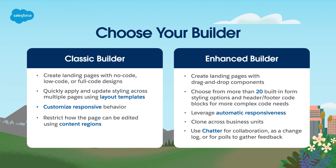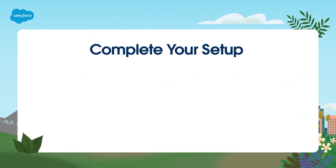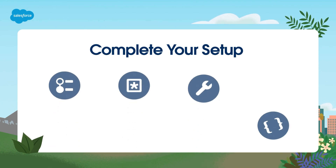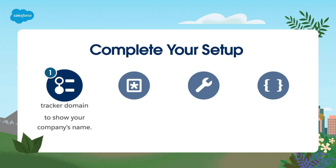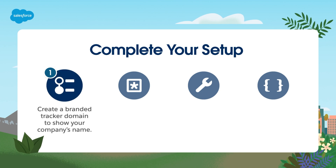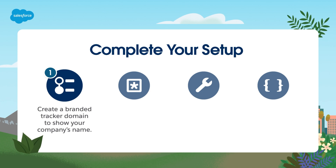You've brushed up on landing page basics. Now it's time to complete a few quick setup steps. To ensure your Account Engagement account and website are ready to support your landing pages, follow these steps. Step 1: Create a branded tracker domain to show your company's name. This will allow you to show your company's name in the landing page URL instead of the generic Account Engagement address.